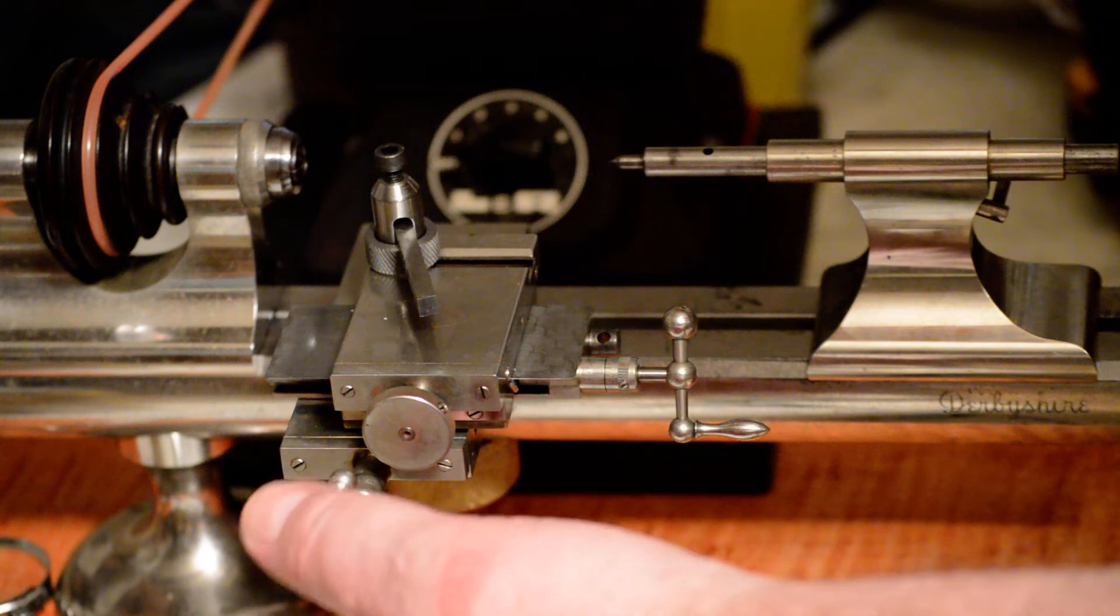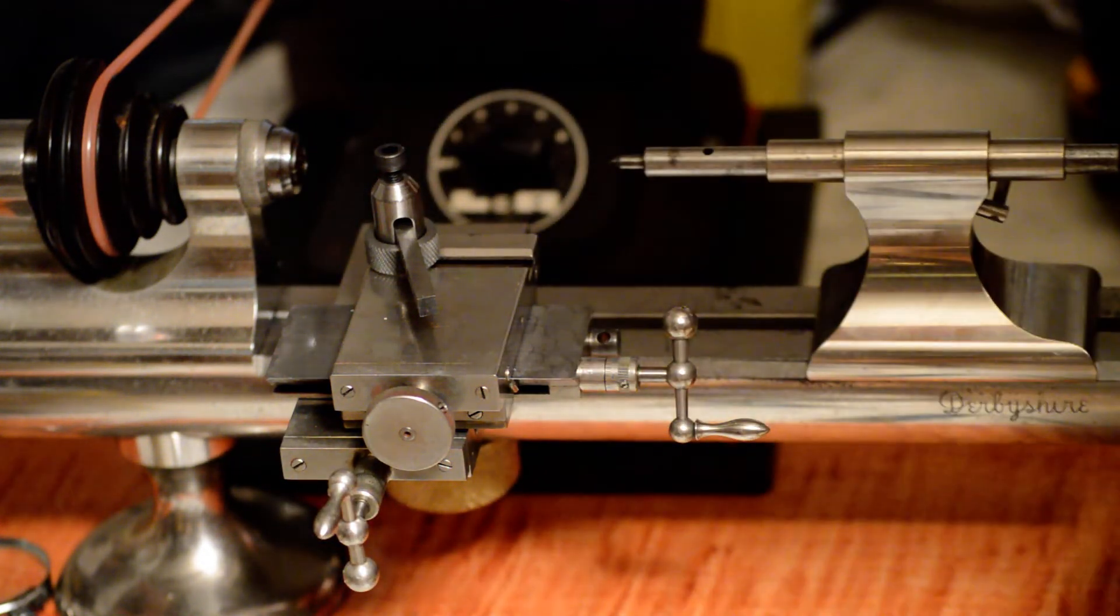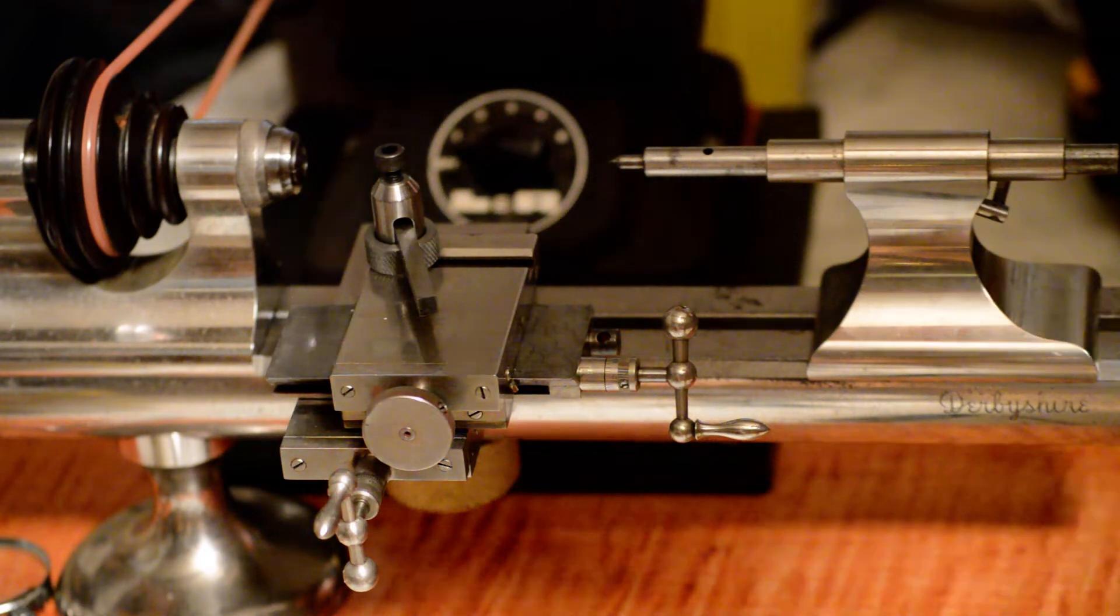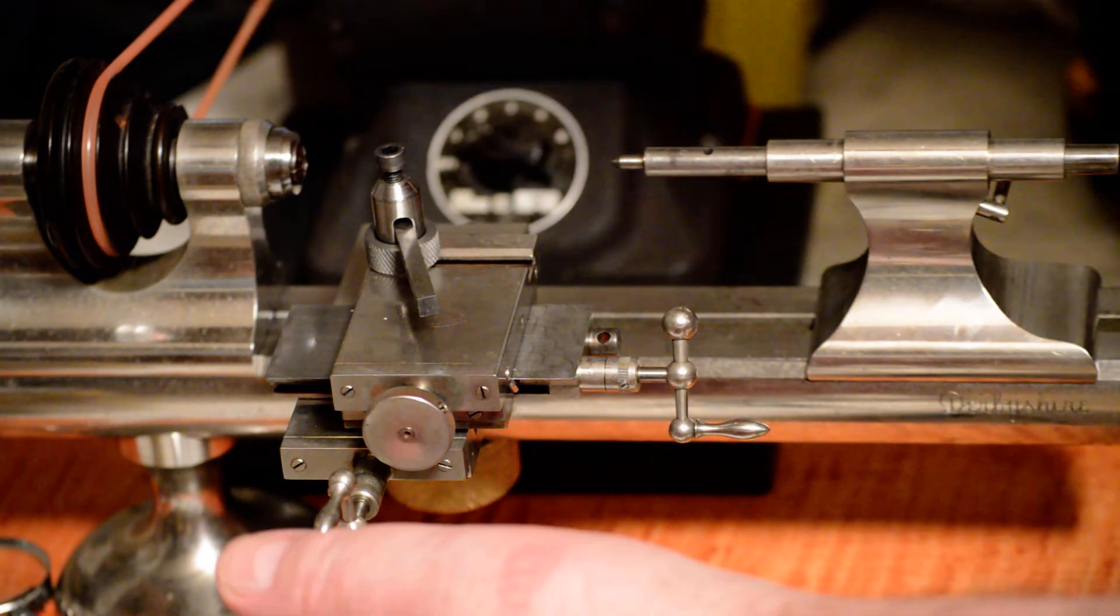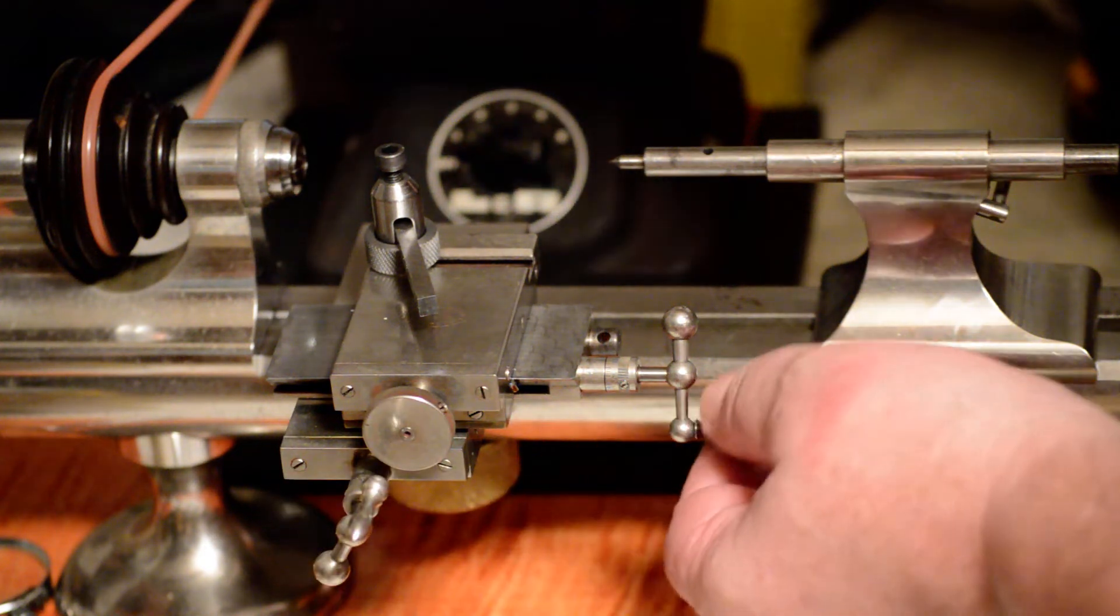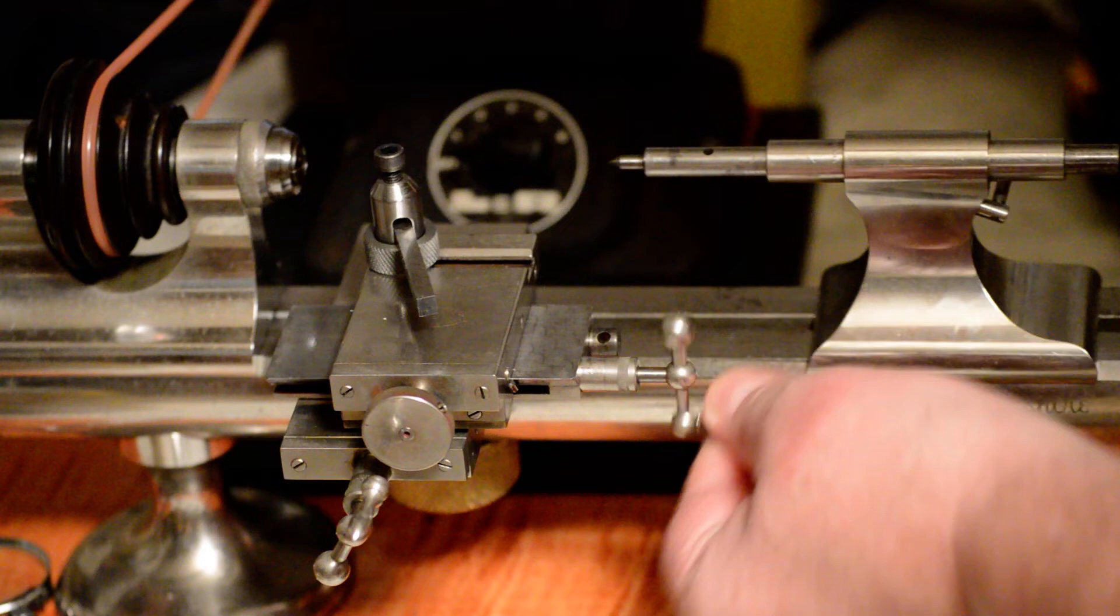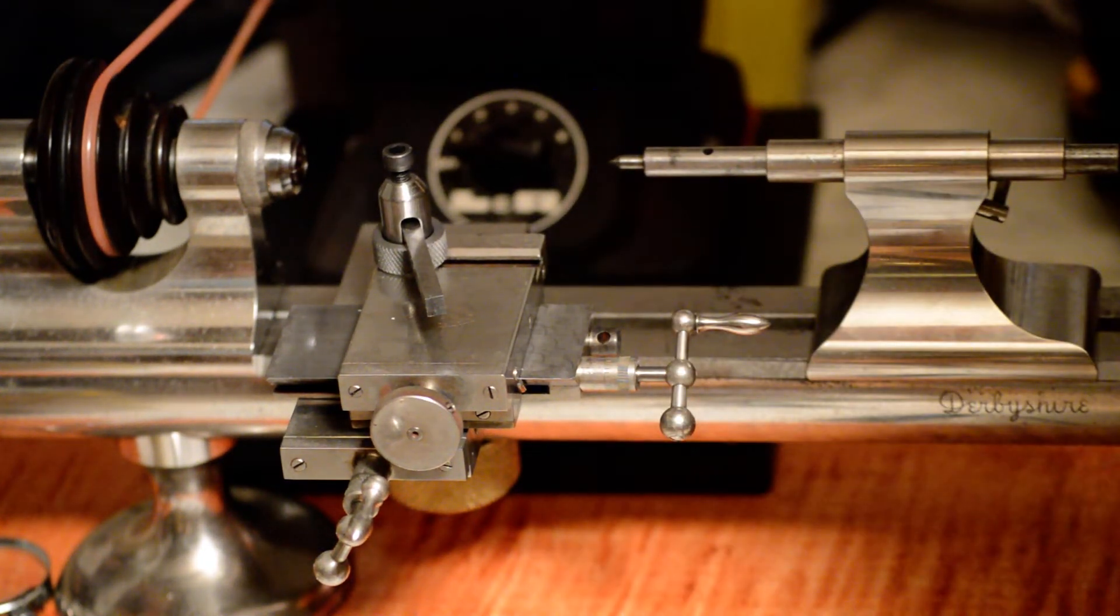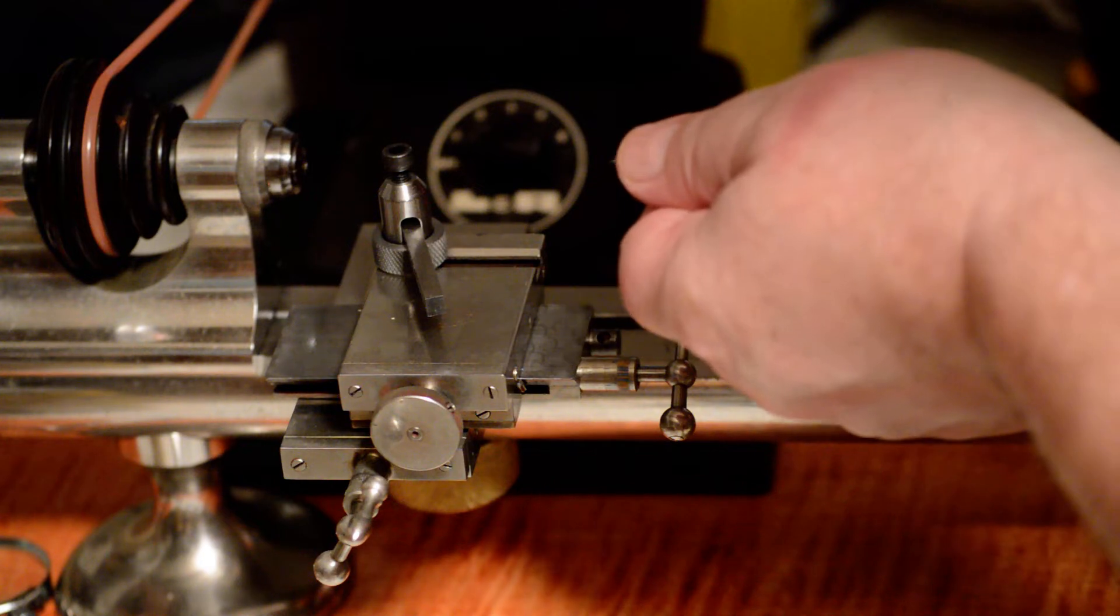...if I had the backlash out and I'd already made a cut and I measured my part and I decide, well, I want to take ten thousandths of an inch off more, I move this exactly ten. And I cut and I come back and when I measure it, it will show that I moved it and I cut and it did take ten more off.